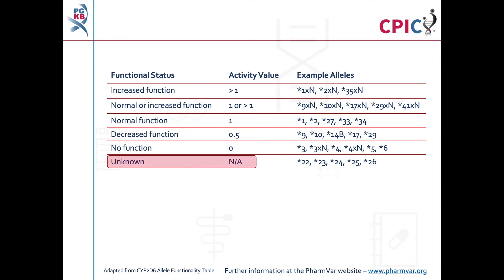Be aware that some CYP2D6 alleles have an unknown or uncertain functional status and should be interpreted with caution on a genetic test. In addition, an important caveat for all genotyping tests is that any alleles which are not detected in the assay are designated as star 1. This can include rare increased function, reduced function, and non-functional alleles which are not routinely screened for in some genotyping tests.